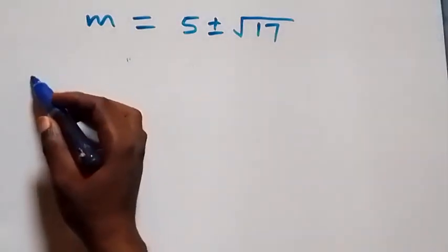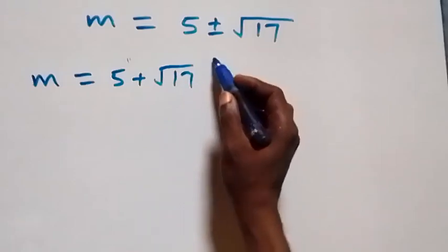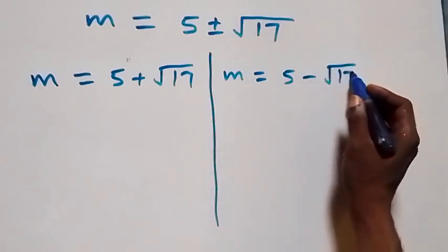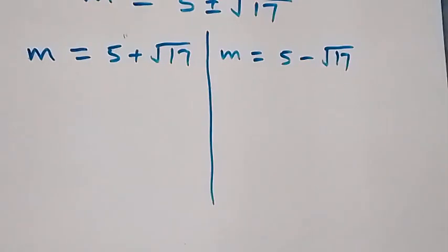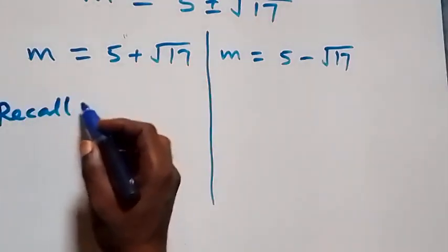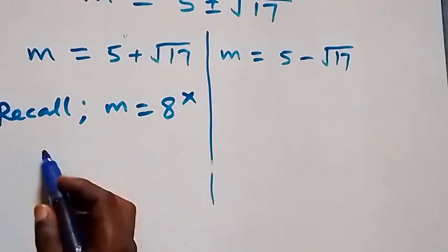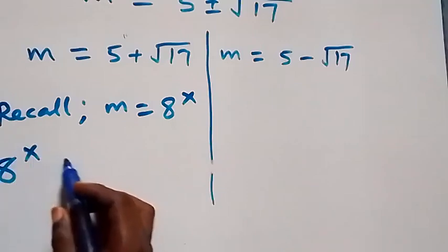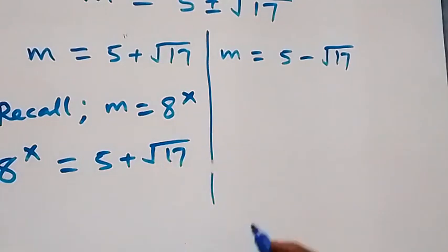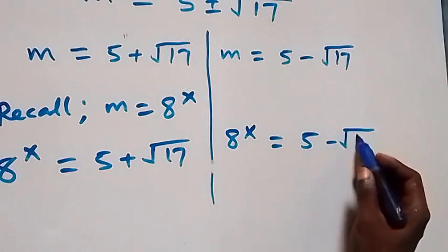We have two values of m. The first one: m equals to 5 plus root 17. And the second one: m equals to 5 minus root 17. From here, we recall that we represented m as 8 raised to power x. So we equate: 8 raised to power x equals to 5 plus root 17, and also 8 raised to power x equals to 5 minus root 17.